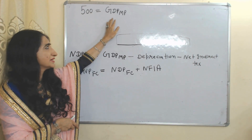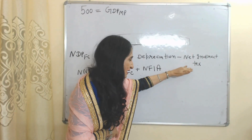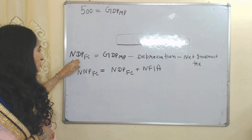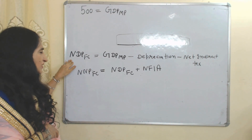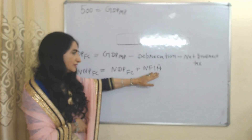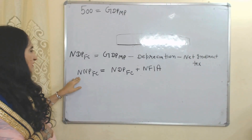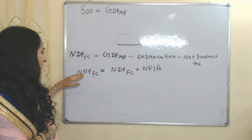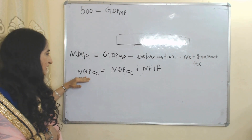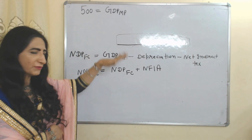In short, we call this GDP at market price (GDPMP). When we subtract depreciation and net indirect taxes from GDPMP, it becomes Net Domestic Product at factor cost (NDPFC). When we add net factor income from abroad to NDPFC, it becomes NNPFC, that is Net National Product at factor cost, which is equal to our national income.